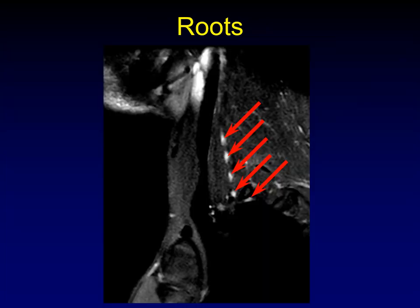Now let's look at this anatomy radiologically on sagittal images — parasagittal images off the cervical spine extending out into the arm. First, the five major nerve roots: C5, C6, C7, C8, and T1 tucked under the first rib. You can take sequential images more medially and trace these back up to the cervical spine to confirm each nerve root.